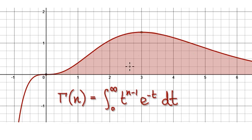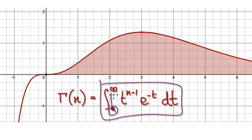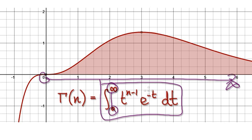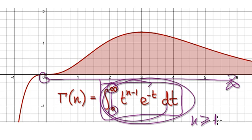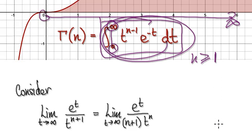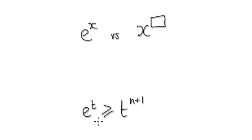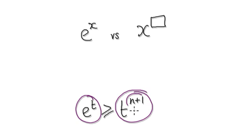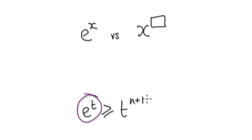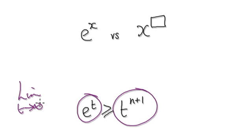Following on from the previous video, we were looking at the gamma function. We were trying to show that this integral from 0 to infinity will converge for all n greater or equal to 1. We got to the stage where we've established that e to the power of t will eventually be bigger or equal to t to the power of n — this thing will eventually overtake the other as t tends to infinity.